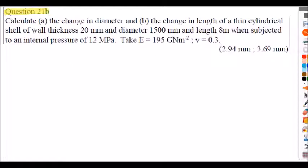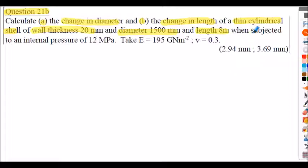Question 21: calculate (a) the change in diameter and (b) the change in length of a thin cylindrical shell — wall thickness 20 mm, diameter 1500 mm, length 8 m — subjected to an internal pressure of 12 MPa. Values of E and ν are stated. Answers shown in brackets — attempt this question.